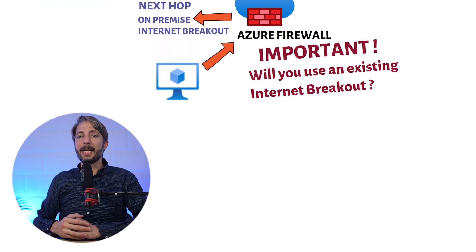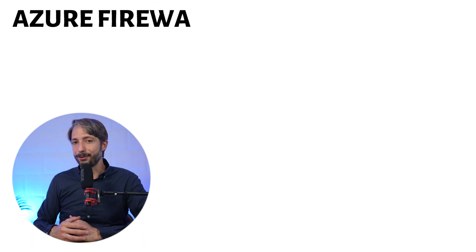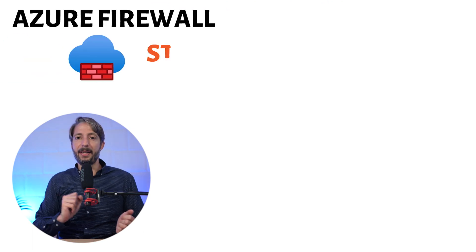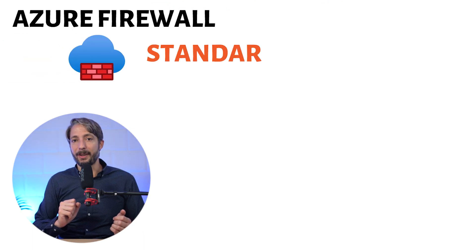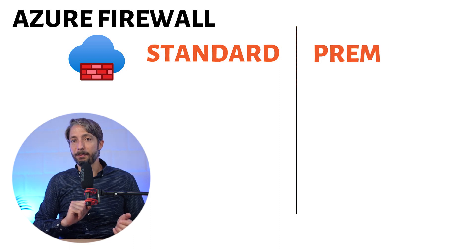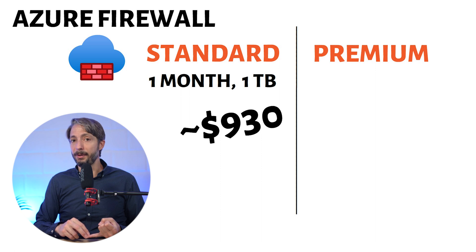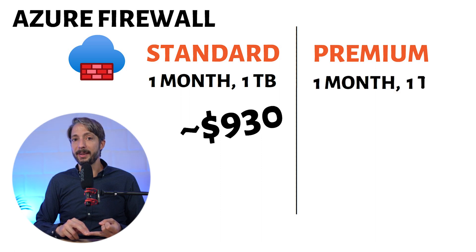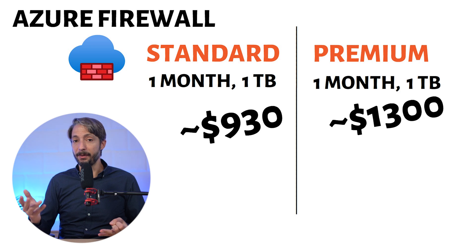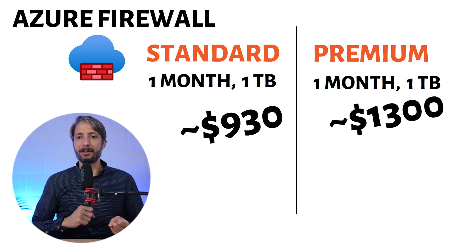Let's look at the different versions and SKUs of the Azure Firewall. We have the Azure Firewall Standard and the Azure Firewall Premium. One month of standard with one terabyte of data is about $930 a month. The premium version costs about $370 more per month.